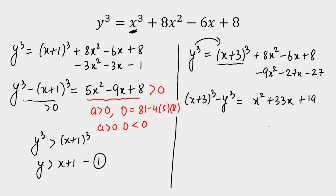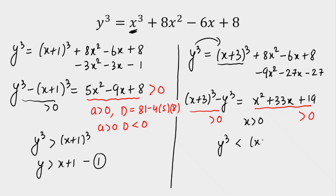Since the question asks for positive integers x and y, for x > 0 the right-hand side value x² + 33x + 19 is always positive. That means (x+3)³ > y³, so y < x+3. Let's call this our second inequality.